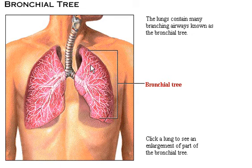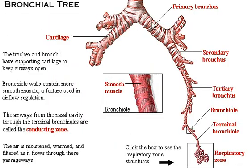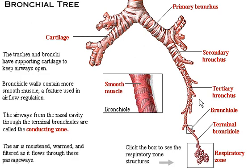Within the lungs, the bronchi are further branched into smaller ones, and this branching of the bronchi into smaller areas is known as the bronchial tree. We further divide the branches into primary bronchi, then secondary bronchi, then tertiary bronchi, then bronchioles, then terminal bronchioles, and then the respiratory zone. As this branching occurs, the amount of cartilage decreases and the amount of smooth muscle increases. When you reach the bronchioles, there is no more cartilage — only smooth muscle.